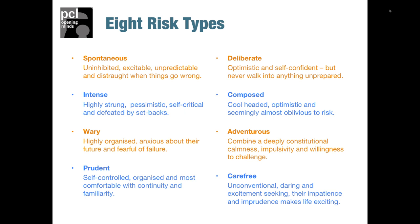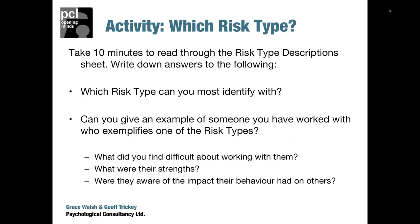For activities, take 10 minutes to read through the risk type descriptions and write down which risk type you most identify with — that's a personal one, so you might not want to do it first. Alternatively: can you give an example of someone you've worked with who exemplifies one of these risk types? Supplementary questions: what did you find difficult about working with them? What were their strengths? Were they aware of the impact their behaviour had on others? The difference is you're focusing on people not in the room, which is safer if the group isn't fully open yet.